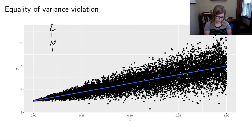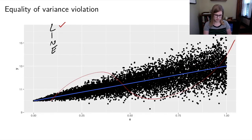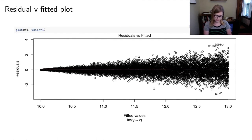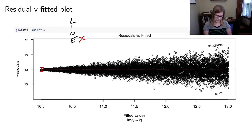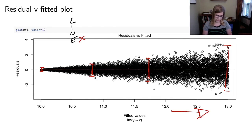The last violation to examine is the equality of variance — the E in LINE. Looking at the scatter plot, linearity seems fine — no curve fits better than the straight line. Independence is the thinking condition, so no plot is used there. Looking at the residual versus fitted plot, the equality of variance violation is clear: there is a large fan shape in the residuals, with a very narrow band for low fitted values that gets progressively wider for larger fitted values.